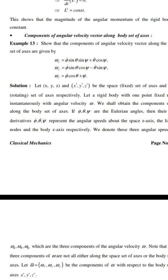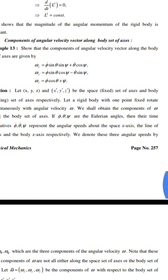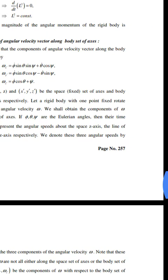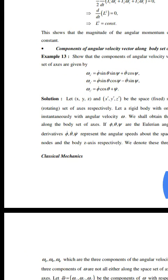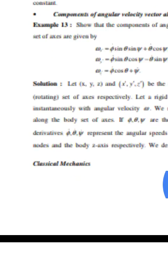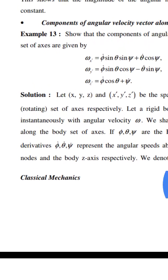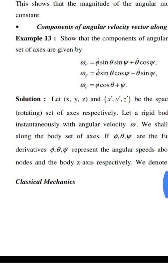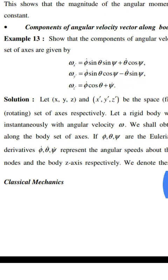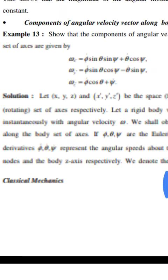Example: Show that the components of the angular velocity vector along the body set of axes are given by: w1 = wx' = phi_dot sin(theta) sin(psi) + theta_dot cos(psi), and w2 = wy' = phi_dot sin(theta) cos(psi) minus theta_dot sin(psi).